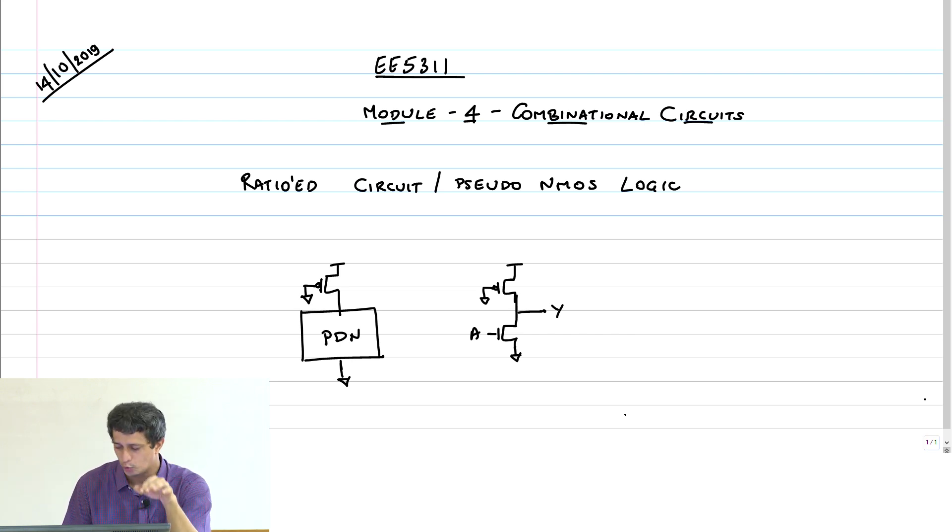However, if you now try to turn this input on by instantaneously taking the input from 0 to 1, you're going to have a fight between the PMOS transistor trying to pull the output to VDD and the NMOS transistor trying to pull the output to ground. Therefore, the output will land up at a logic VOL, output logic low, which is greater than 0. We did some calculations and figured that VOL is simply proportional to WP by WN, where WN and WP are the widths of the NMOS and PMOS transistors.